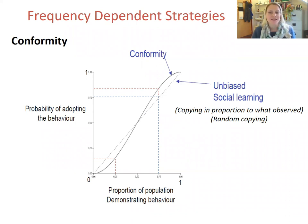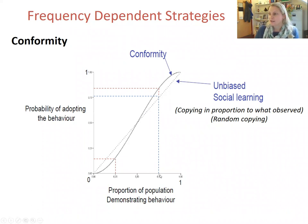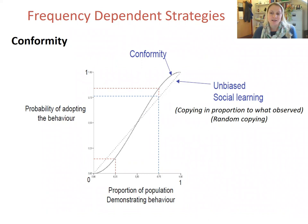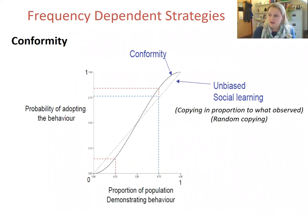We can compare the so-called S-shaped curve of conformity to this unbiased social learning. For conformity, when the learned behaviour is common — say at 75% of the population — the probability of adopting the behaviour is actually greater than 75%, so greater than the proportion of the population demonstrating the behaviour. Likewise, when the learned behaviour is rare, say at 25%, the probability of adopting the behaviour is less than the proportion of the population demonstrating it.